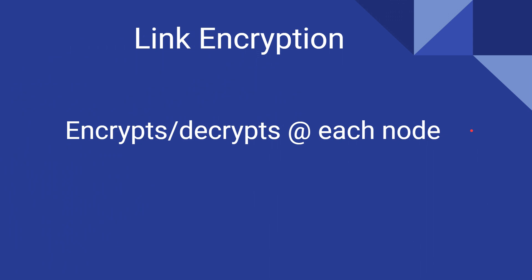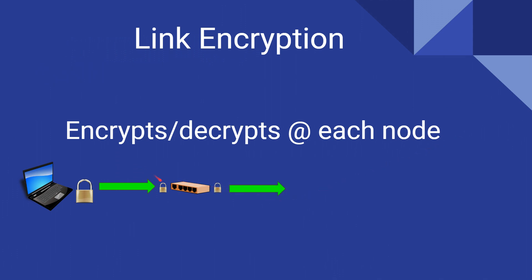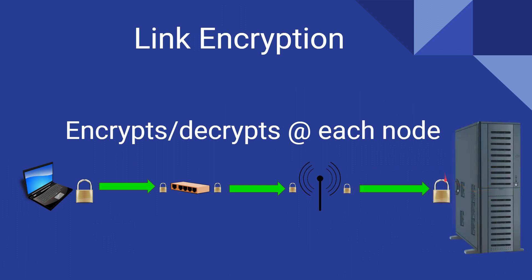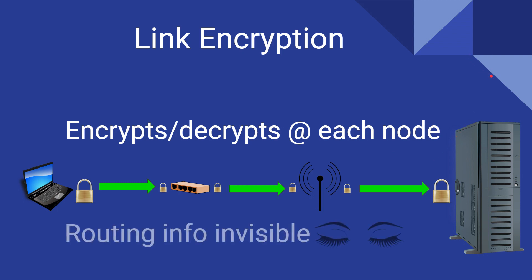Link encryption is when you encrypt and decrypt at each node. For example, if you're at your computer with link encryption enabled and sending data to another device, it would encrypt and decrypt at each stop. A router will decrypt and then re-encrypt, then decrypt again at the next hop, re-encrypt before sending to its ultimate destination, where it will also decrypt the information. You would have to have the appropriate keys in place at each stop, so it's a bit more effort to implement.